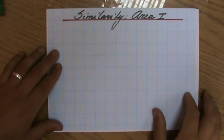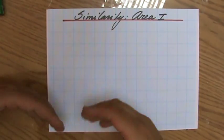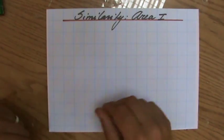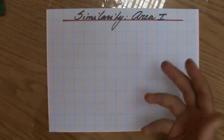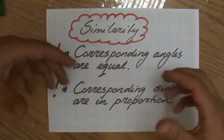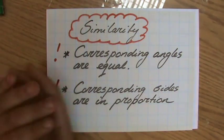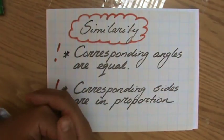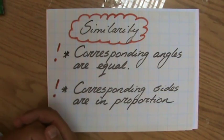Welcome to this video about similarity with regards to area. In my previous videos I have explained what similarity is. Similar figures are figures where the corresponding angles are equal and the corresponding sides are in proportion.